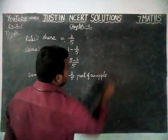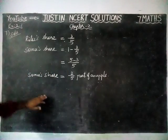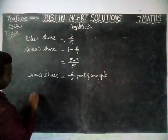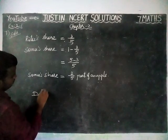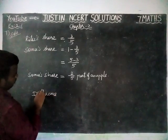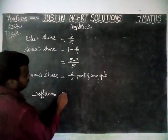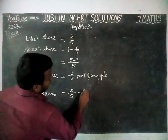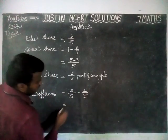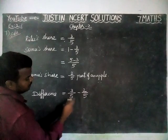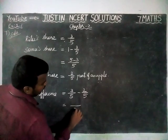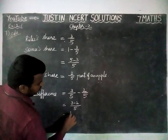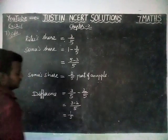Now we have to find the difference — by how much Ritu's share is the greater value. The difference is equal to 3/5 minus 2/5. Since the denominators are the same, we write the common denominator 5, and 3 minus 2 is equal to 1, divided by 5.